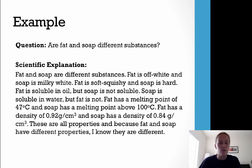Fat has a melting point of 47 degrees Celsius, and soap has a melting point above 100 degrees Celsius. Fat has a density of 0.92 grams per centimeter cubed, and soap has a density of 0.84 grams per centimeter cubed. These are all properties, and because fat and soap have different properties, I know they are different.